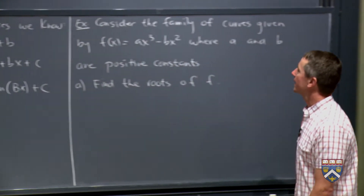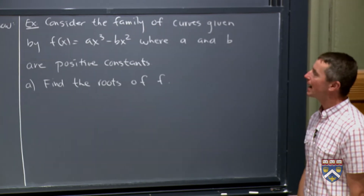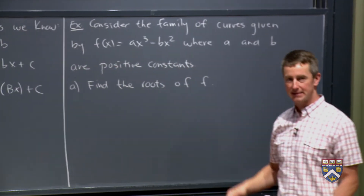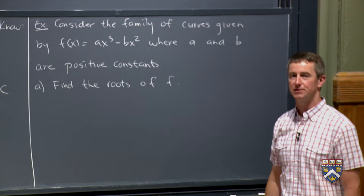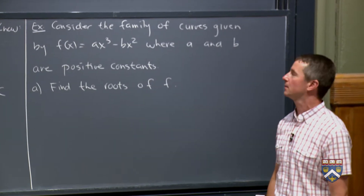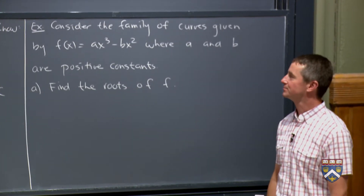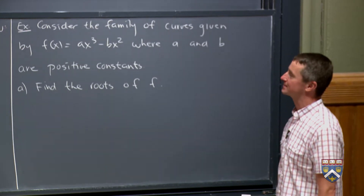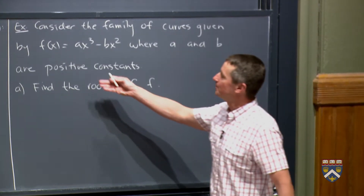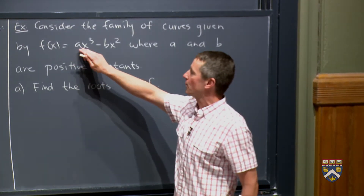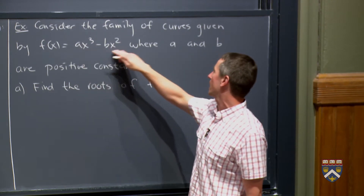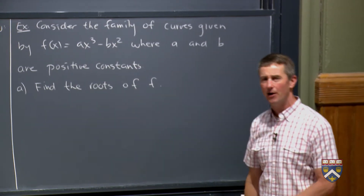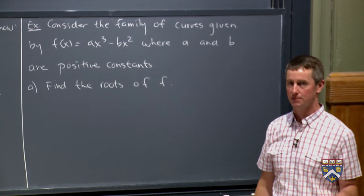So let's try an example. We're not going to do the entire cubic function family all in one go — that can be a little tedious. So let's just look at members that take the form ax³ minus bx², where a and b are positive constants. We want to figure out everything we can about this family of curves.